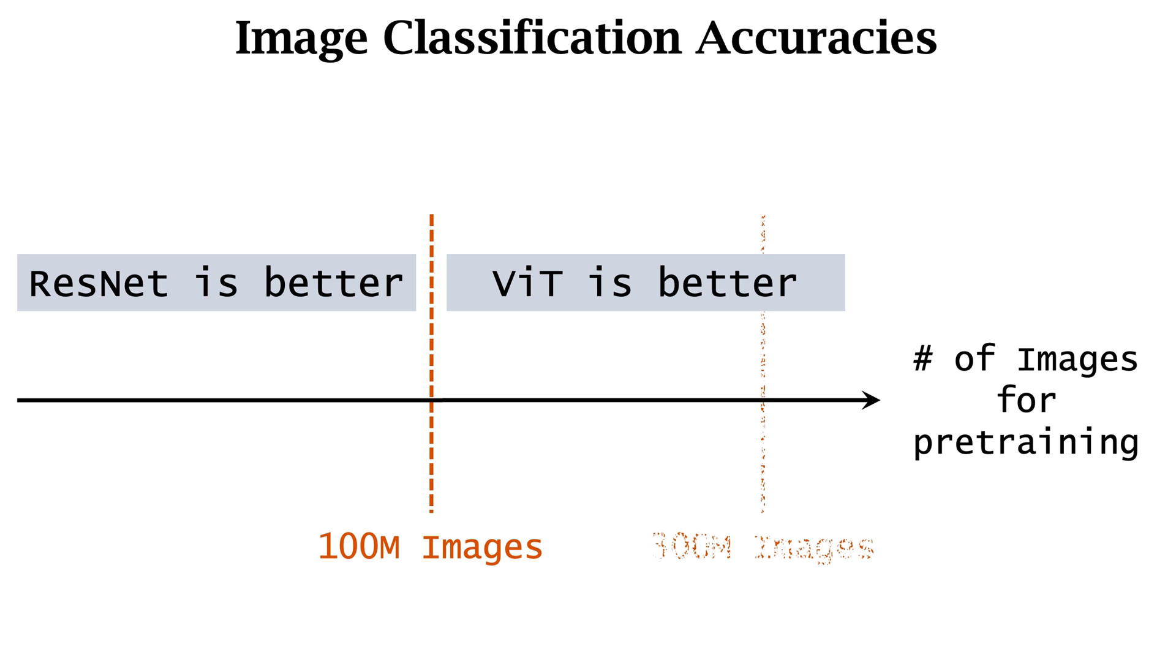Judging from the result, 300 million is not enough. If the number of images can further grow, then the accuracy of Transformer can be even better.